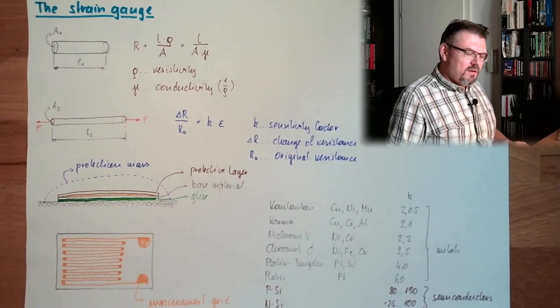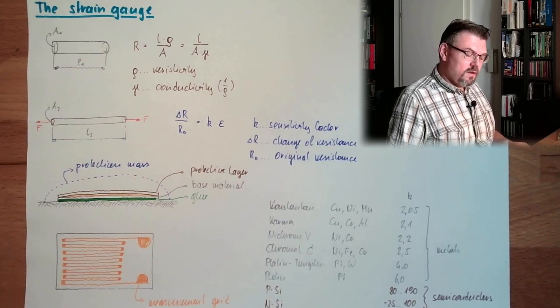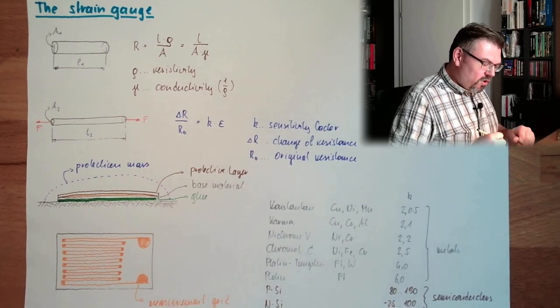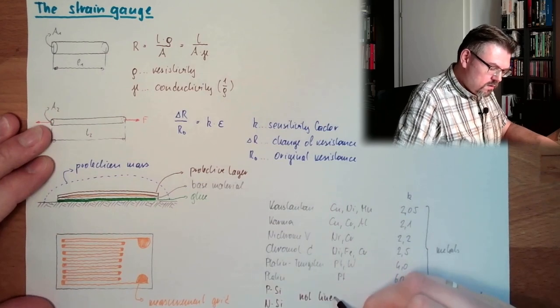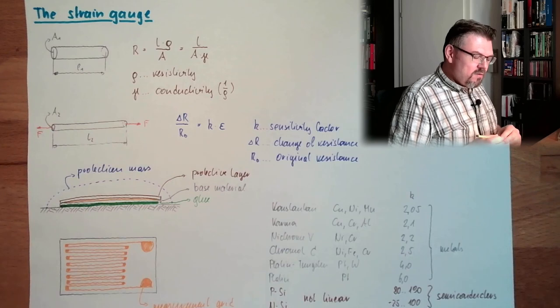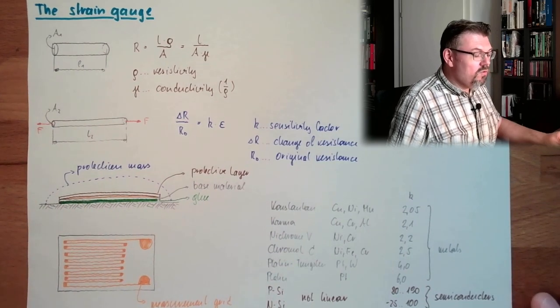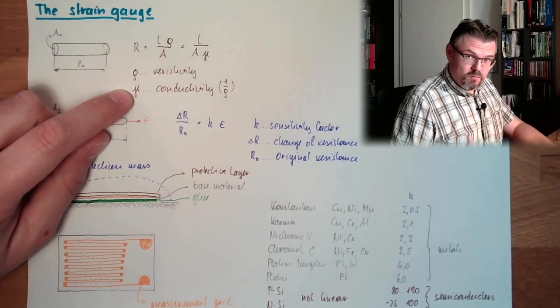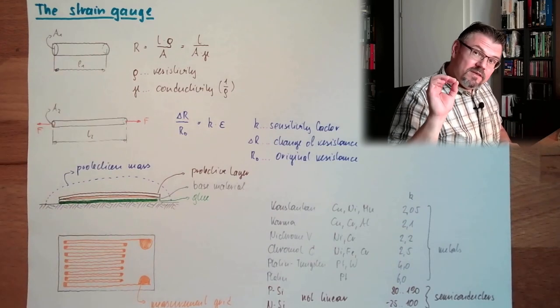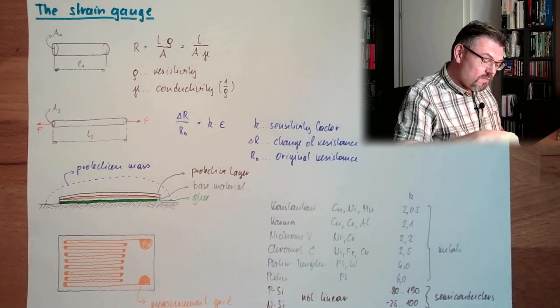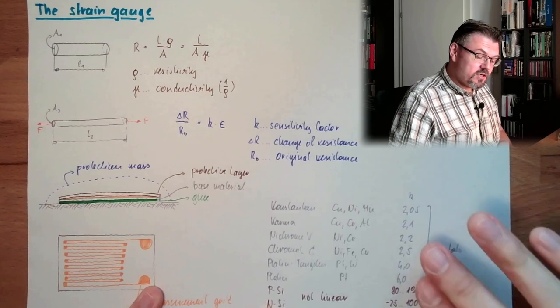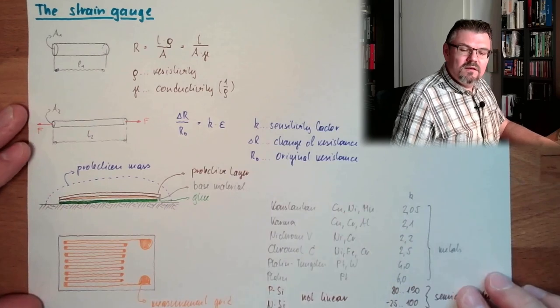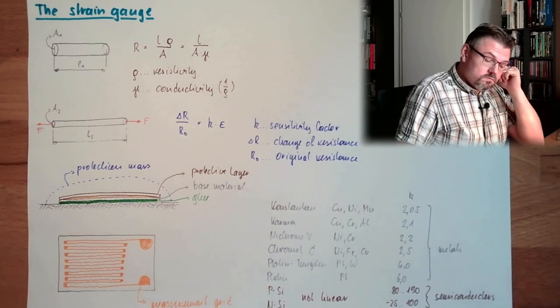Now I said big K is beneficial. Here we have 80 to 190. But it's a range. These things here are not linear. Why they are not linear? Because in semiconductors, there is not only the form changing. However, there is also the resistivity or the conductivity changing because of the form. So it's non-linear. Here we have a high resistance change, but not linear. Here we have quite linear resistance change, but not that high. So the usual ones are still metal. Because we want to measure linear. And then we have to measure more accurate.